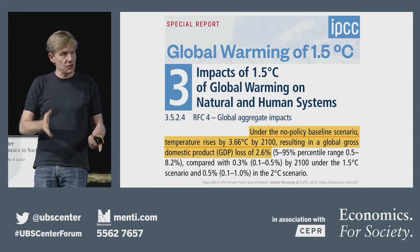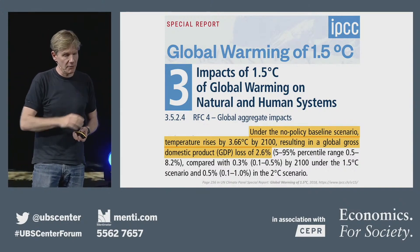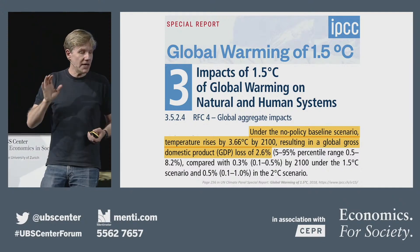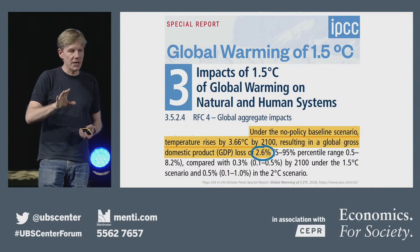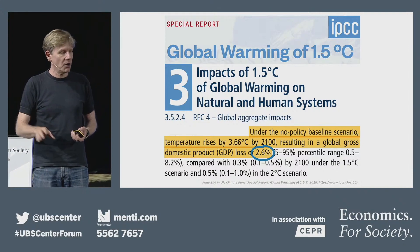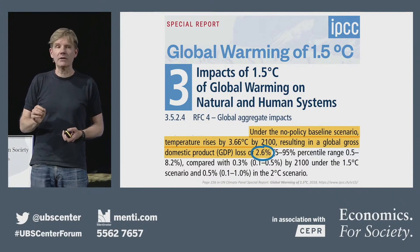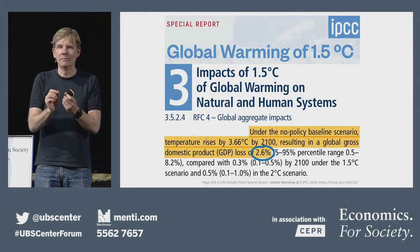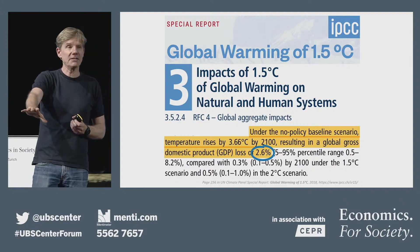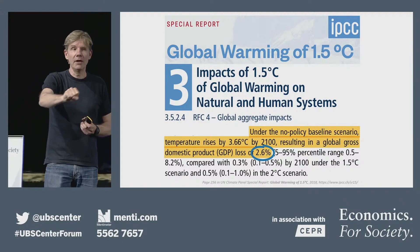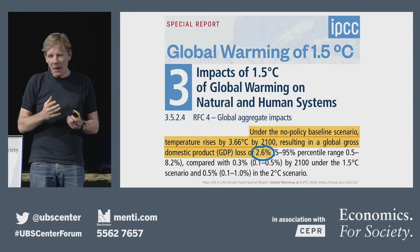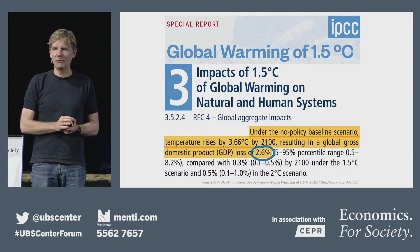Because I happen to think that evidence still matters, and we should be looking at what is actually the cost of global warming. The UN climate panel in 2018, in their 1.5 degree report — on page 256 if you want to look it up — tells us that under the no-policies baseline scenario, temperatures rise by 3.66 degrees by 2100, resulting in a global GDP loss of 2.6%. This is important, because saying it's 20% means you're willing to give 10% of your income to fix a 20% problem. If the real problem is 2.6%, as the UN climate panel and the evidence tells us, you would probably be less likely to give away 10% of your income to fix it.